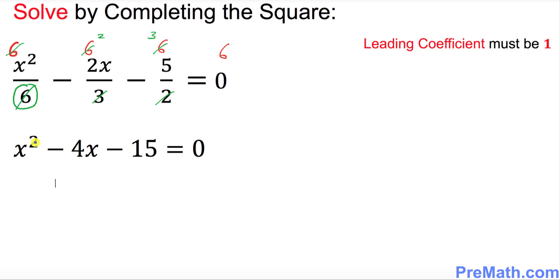Obviously you can see the leading coefficient is 1. Now the next step, I want you to go ahead and move this negative 15 on the right hand side. We must have only x variables on the left hand side.